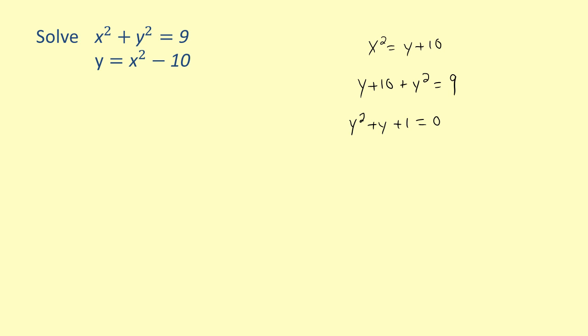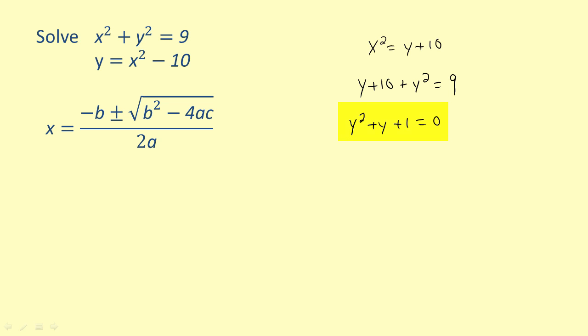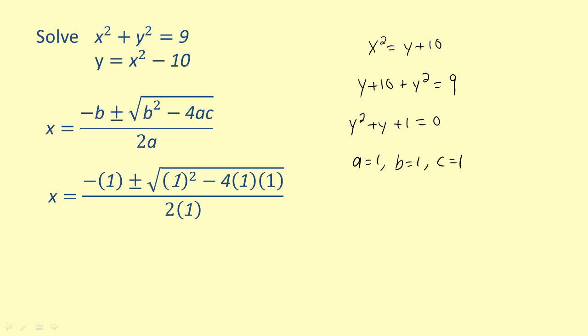In cases like this, we can solve using the quadratic formula. Looking at the equation in terms of y, we have a equals one, b equals one, and c equals one. Substituting these values into the quadratic formula, we have negative one plus or minus the square root of one squared minus four times one times one, all divided by two times one. Simplifying underneath the radical gives negative three. Since we cannot take the square root of a negative number, this system of equations has no solution and the circle and parabola will never intersect.